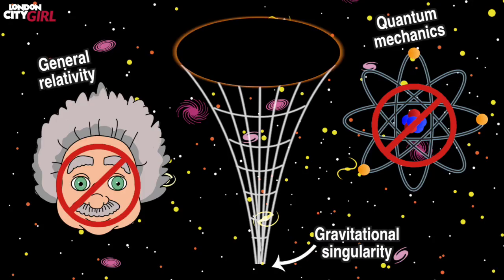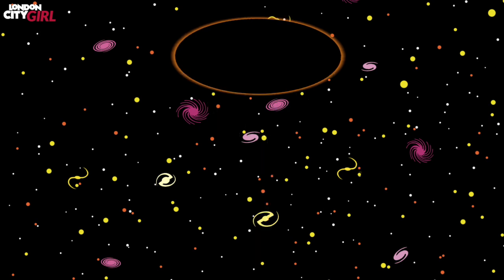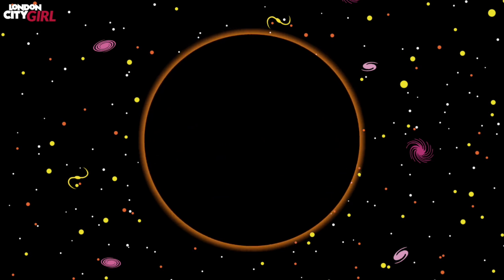Both general relativity and quantum mechanics fail us when it comes to describing what happens at the gravitational singularity of a black hole. The gravity of a black hole is so powerful that nothing can escape it, not even light. The boundary around a black hole beyond which no light or other radiation can escape is known as the event horizon.